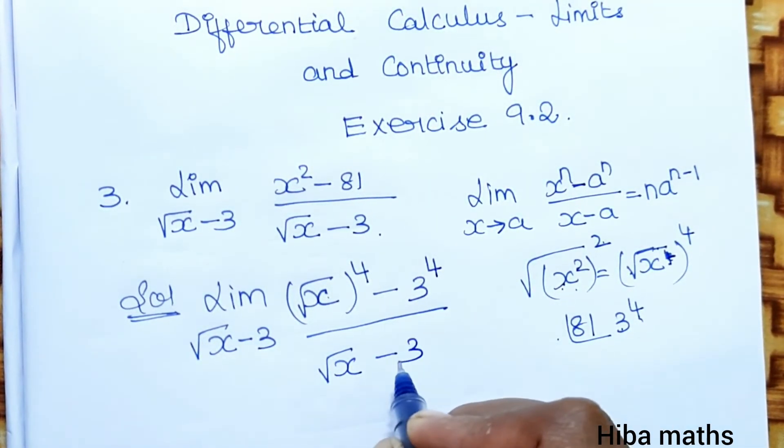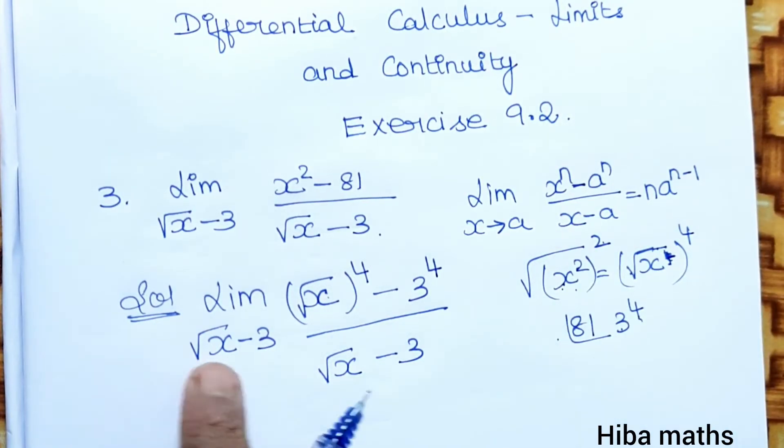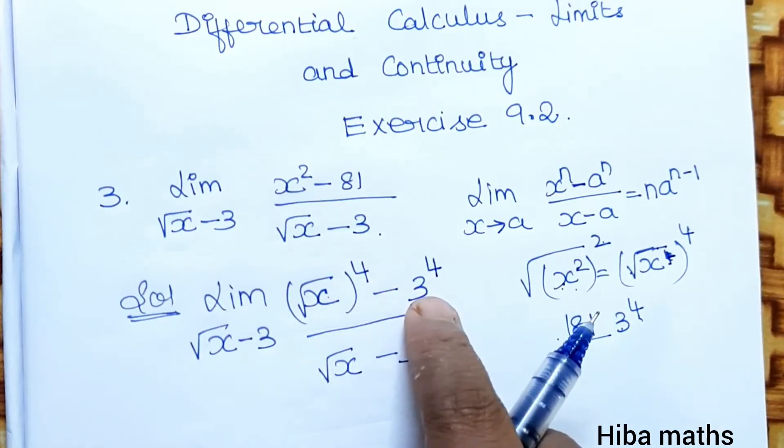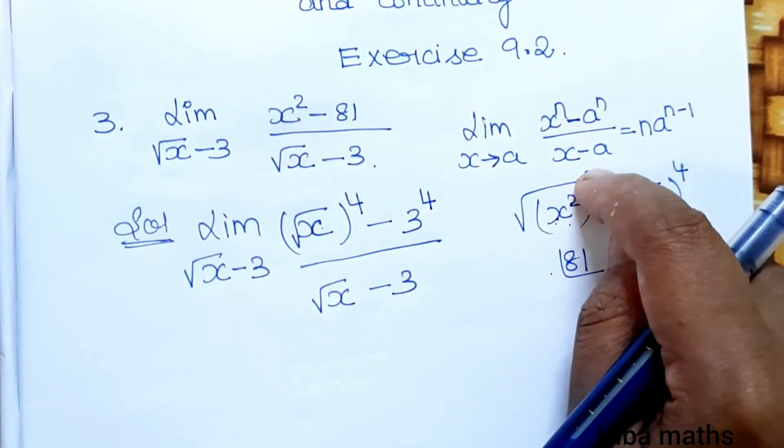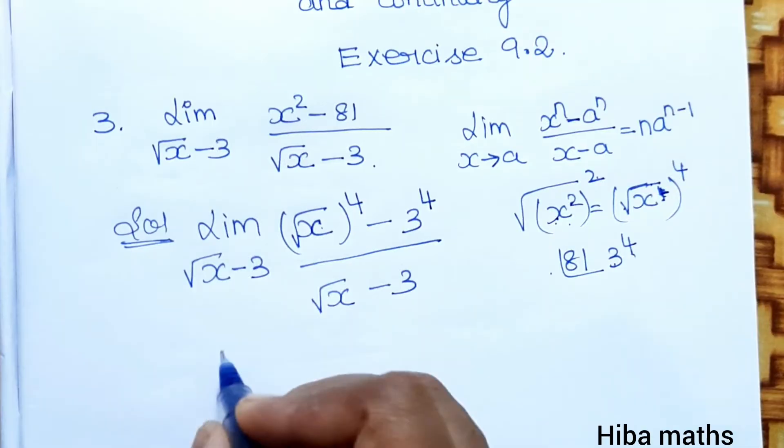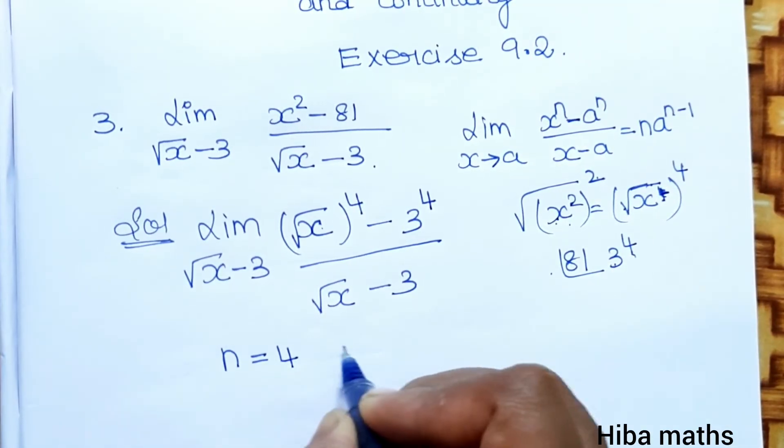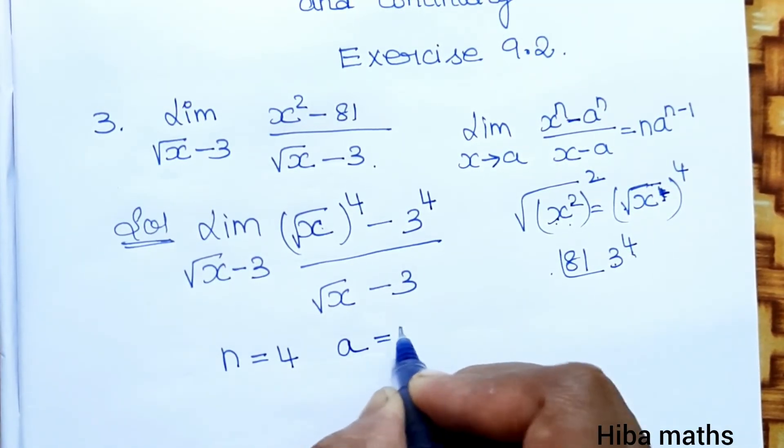root of x minus 3. Now to compare: x minus a, x minus a, x power n, a power n. So the condition is satisfied. Now this is sorted. n value is 4, a value is 3.